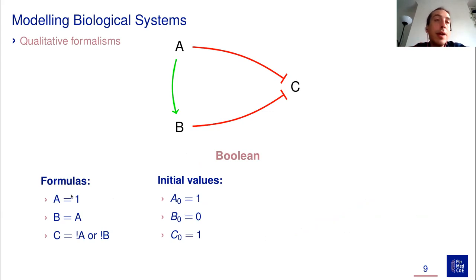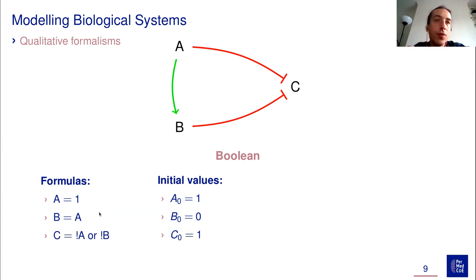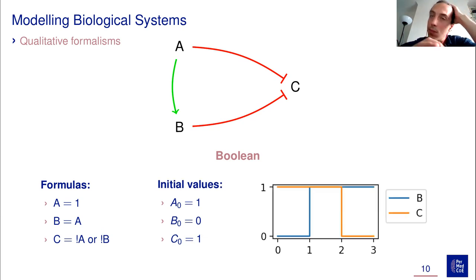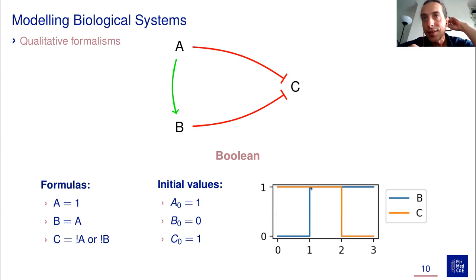With qualitative Boolean formalism, the formulas are simple: A equals one because that's the value we choose; B equals A since A exerts a positive influence on B; and C receives negative influence from both nodes, so NOT A OR NOT B. Starting with the same initial values — A true, B false, C true — B activates at time step one, then at time step two C deactivates, and the system reaches a stable value.